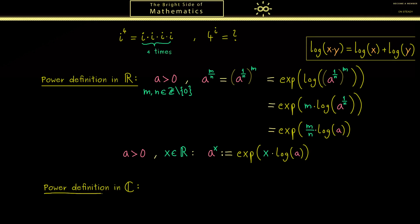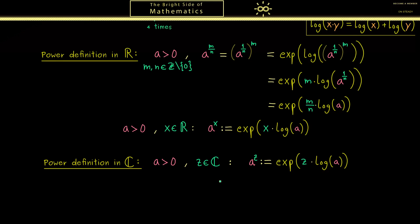Therefore, we just use this for the power definition in ℂ. The base a should still be a positive real number like 4, but the exponent can be any complex number z. Then a to the power z is now well-defined: it's simply the complex exponential function of z times the real logarithm of a. So in summary, you should remember if the base is a positive real number, the exponent can be any complex number and we don't have a problem with this definition. For example, you can take Euler's number e as the base, and then e to the power z is simply the exponential function. Hence, this explains why we have this short notation for the exponential function.